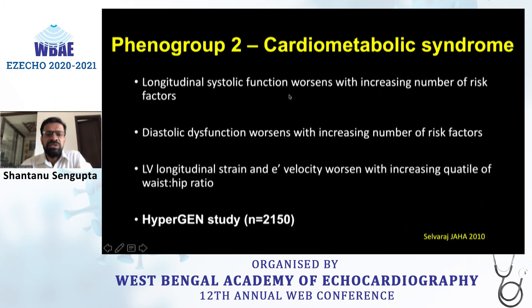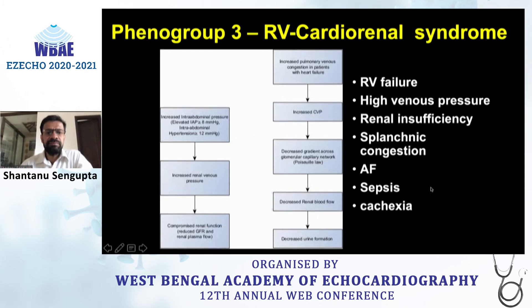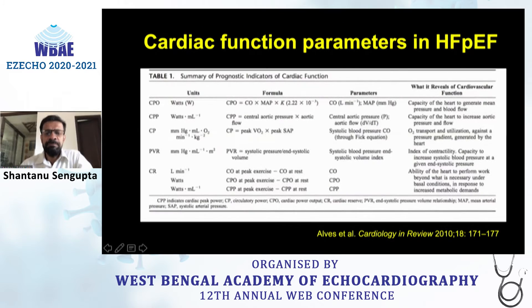Phenotype 2, the most common group, has longitudinal systolic function involvement and more cardiac involvement. The diastolic dysfunction is pronounced and worsens with increasing number of risk factors like diabetes and hypertension; it can be identified by strain analysis. Phenotype 3 has the poorest prognosis, with higher RV involvement, renal insufficiency, atrial fibrillation, and sepsis or pandemic-related conditions. It is important to identify all three groups.